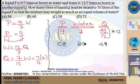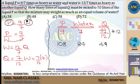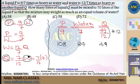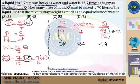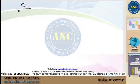Think logically: liquid P is 9/7 times as heavy as water — you are comparing P with water. The second statement says water is 12/7 times as heavy as liquid Q — comparing Q with water again. So water is the intermediate connecting both P and Q. The resultant value for both P and Q is water. If P is 108, then Q is 49 and water is 84.